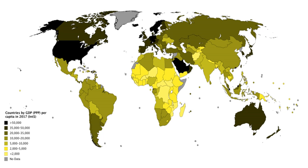A common formula is: GDP equals compensation of employees plus gross operating surplus plus gross mixed income plus taxes less subsidies on production and imports. Compensation of employees measures the total remuneration to employees for work done, including wages and salaries as well as employer contributions to social security. Gross operating surplus is the surplus due to owners of incorporated businesses, often called profits. Gross mixed income is the same measure as gross operating surplus, but for unincorporated businesses, which often includes most small businesses. The sum of these is called total factor income.